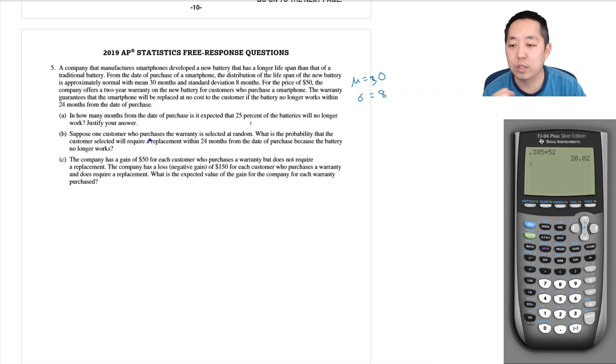For the price of $50, the company offers a two-year warranty on the new battery for customers who purchase a smartphone. The warranty guarantees a smartphone will be replaced at no cost to the customer if the battery no longer works within 24 months of the date of purchase. How many months from the date of purchase is expected that 25 percent of the batteries will no longer work?